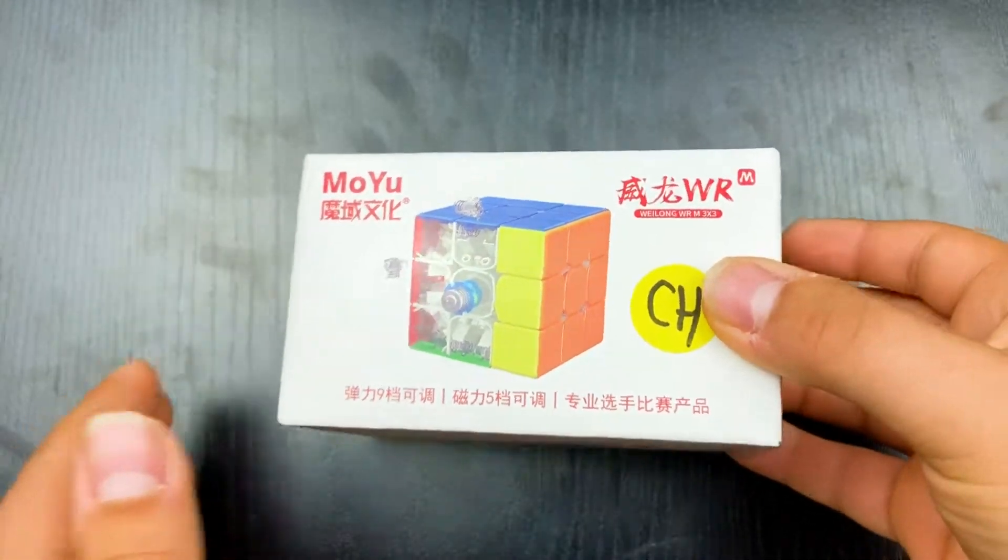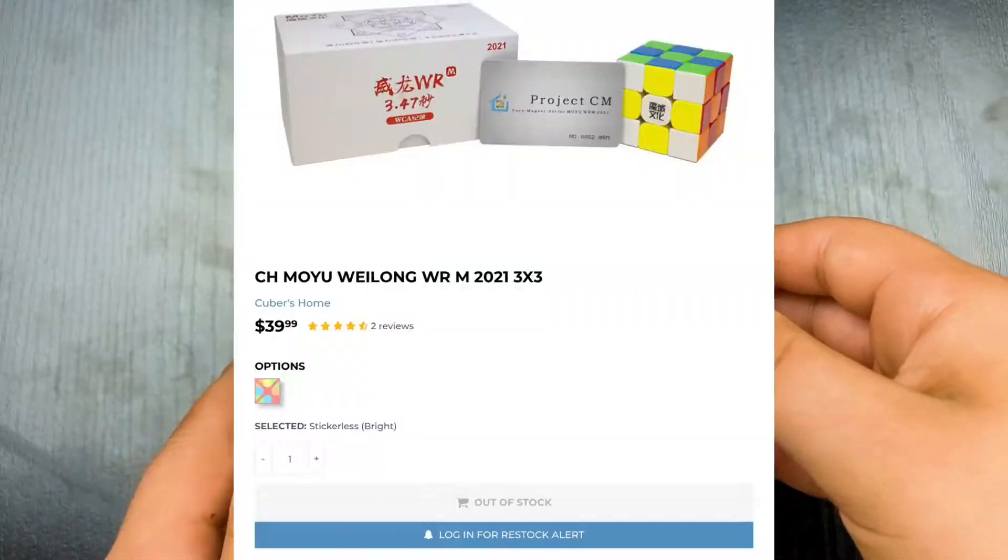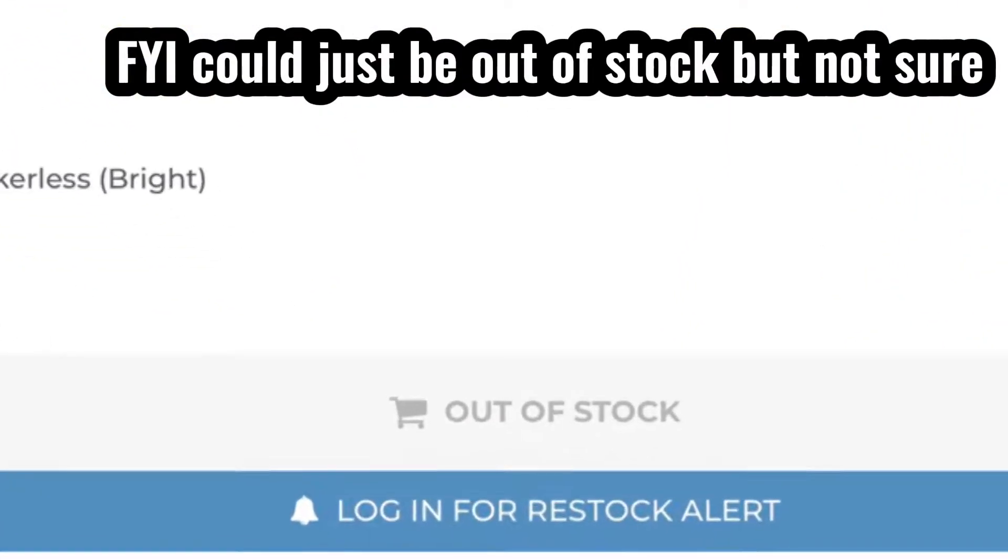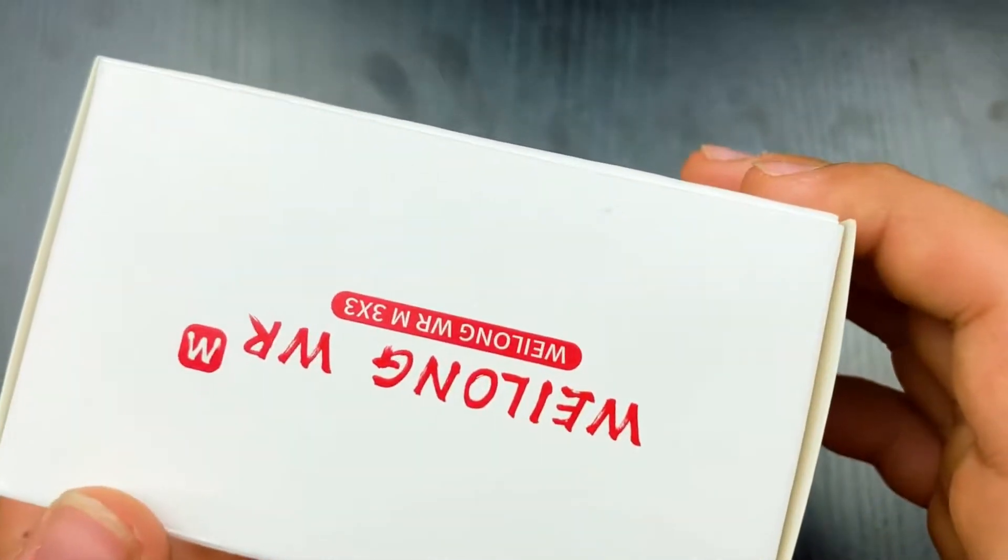Okay guys, so I am going to be unboxing this cube. Just a quick note, this is actually the Lite version. They actually stopped selling the regular Cubing Home version. I did want to get the Lite anyway just because it's cheaper. This was actually a birthday present so I didn't pay for this.